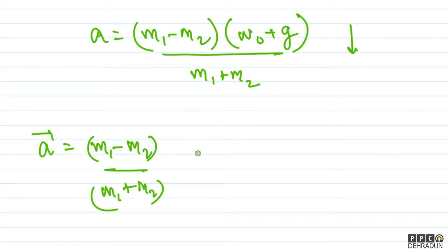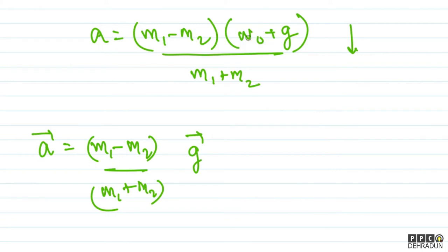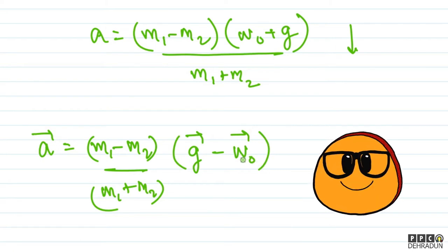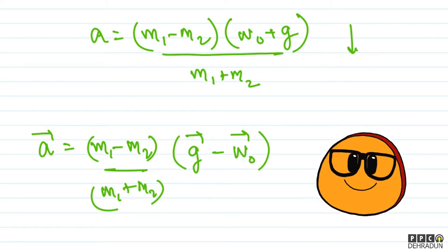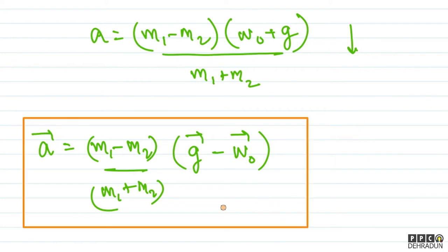So another way to write this acceleration vector is: a = (m1 − m2)/(m1 + m2) × (g_vector − w0_vector), where I write g vector first because I assumed acceleration in the direction of g vector. Here w0 vector is upward, so minus w0 vector means it adds magnitude-wise with g vector. This is the acceleration of M1 with respect to the elevator.